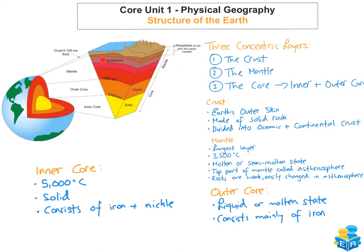The crust is the outer skin of the Earth, made of solid rock, and divided into oceanic and continental crust. To summarise, the three concentric layers are the crust, the mantle, and the core — with the core made up of two layers: the inner core and the outer core.